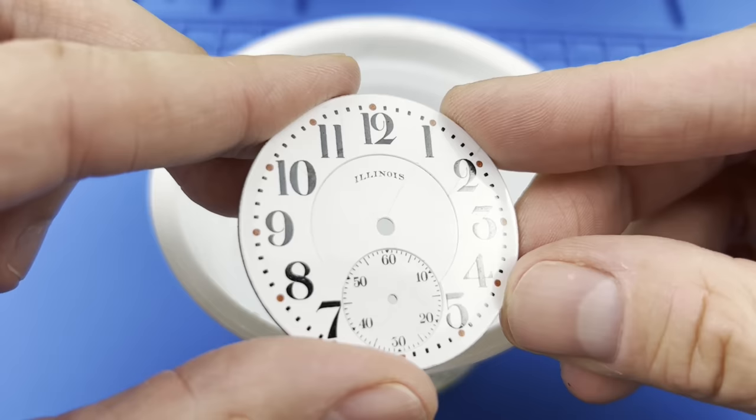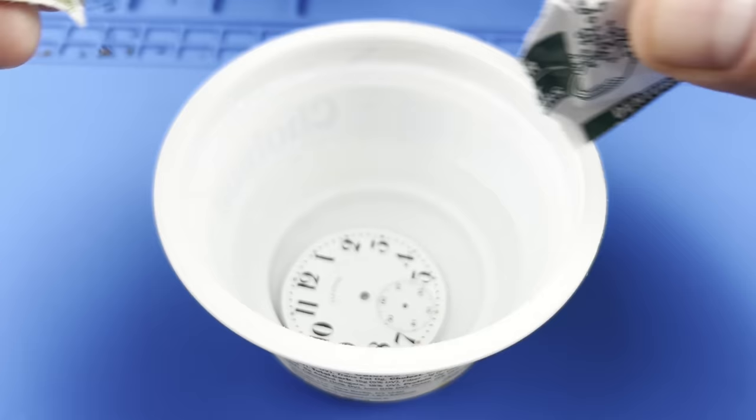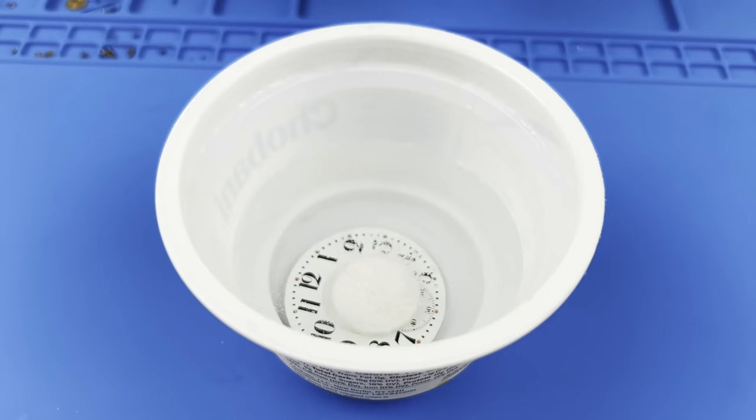The dial itself has several hairline cracks in the enamel. While the cracks themselves cannot be repaired, the small bit of dirt that makes its way into the cracks is really what makes them visible. Denture cleaner tablets work really well at cleansing these dials, making those hairlines far less visible. I'll get it soaking and check back in 24 hours or so.